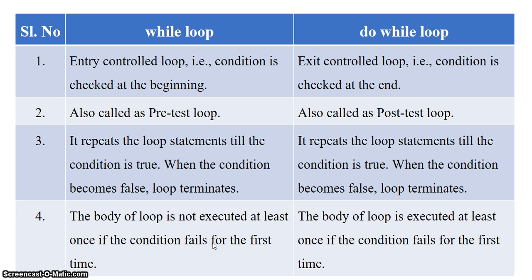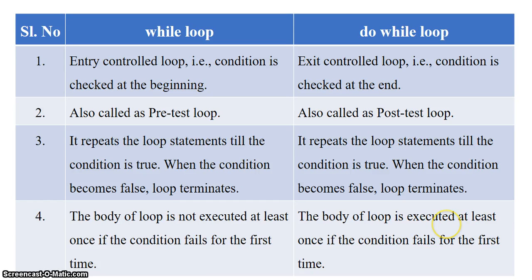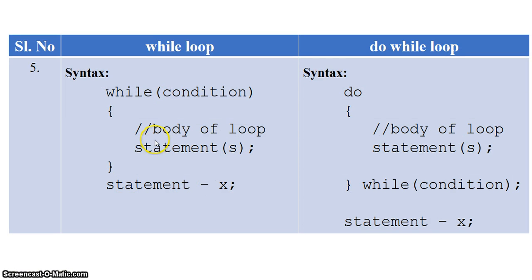The most important difference between while loop and do-while loop is this: the body of while loop is not executed even once if the condition fails for the first time. If the condition is false from the very first check, the body of while loop is never executed. Whereas in do-while, the body is executed at least once — even if the condition fails for the first time, the body of do-while executes a minimum of one time.